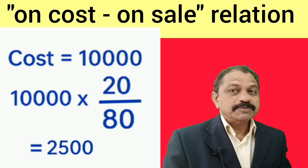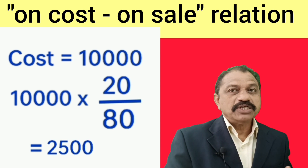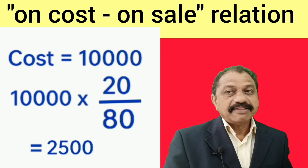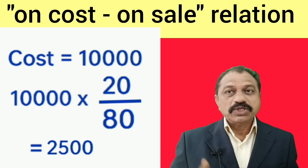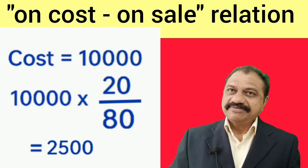Therefore sales price will be cost plus profit — that is 10,000 plus 2,500 equals 12,500.